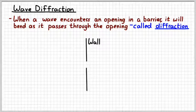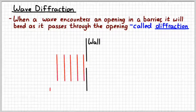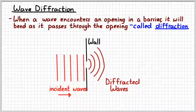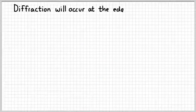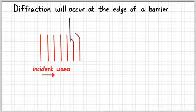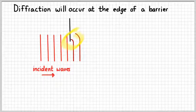A typical picture looks something like this: here is a wall or barrier with an opening in the middle of it. Here come some waves — we're looking at a top view, just the wave crests, moving to the right. As they go through the opening, they bend into more of a spherical shape, and we say the waves have been diffracted. Diffraction can also occur just at the edge of a barrier, where the wave bends a little bit into that spherical shape again.